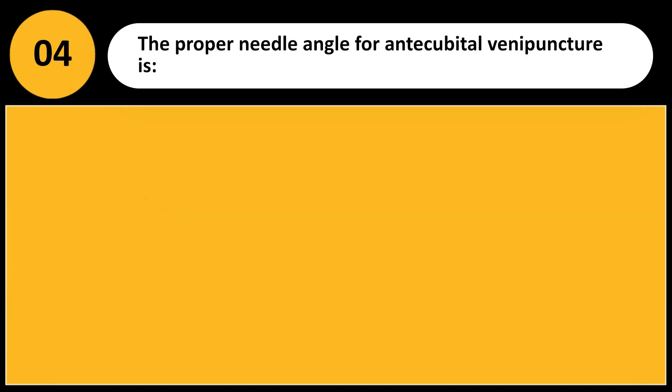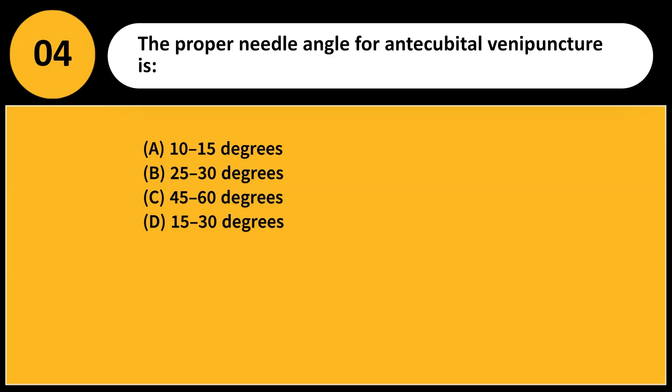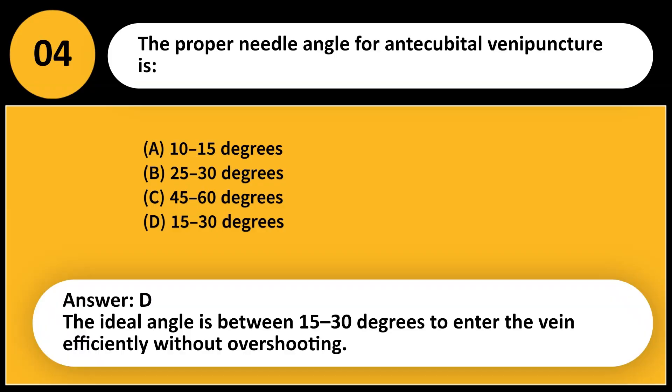The proper needle angle for antecubital venipuncture is: A. 10 to 15 degrees. B. 25 to 30 degrees. C. 45 to 60 degrees. D. 15 to 30 degrees. Answer: D. The ideal angle is between 15 to 30 degrees to enter the vein efficiently without overshooting.